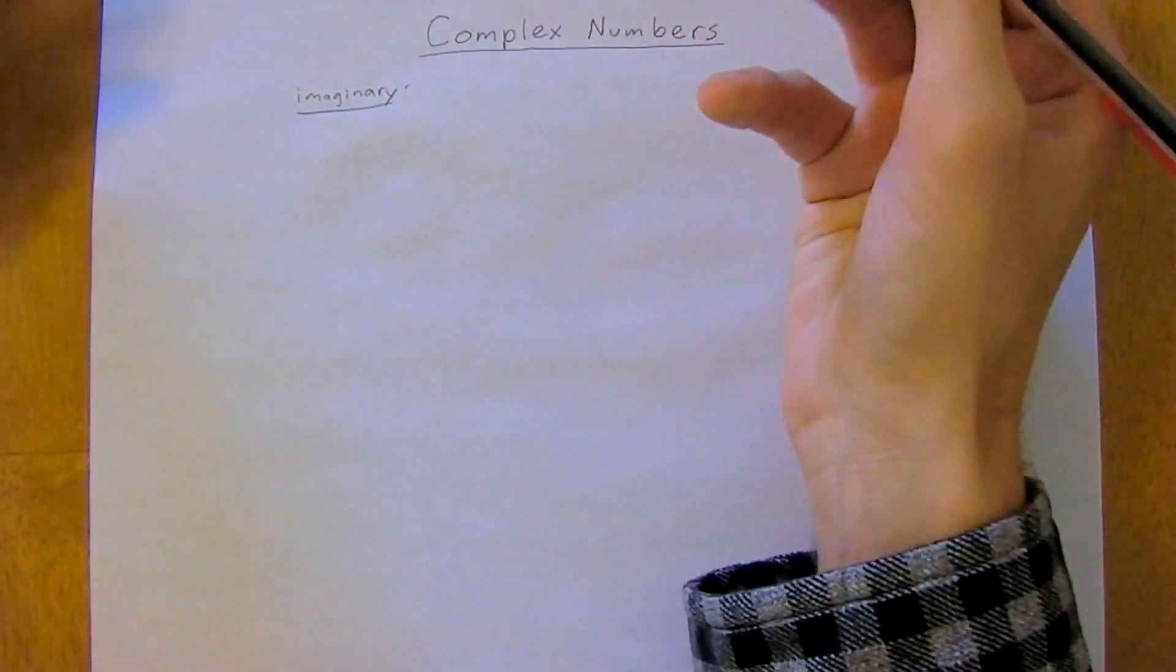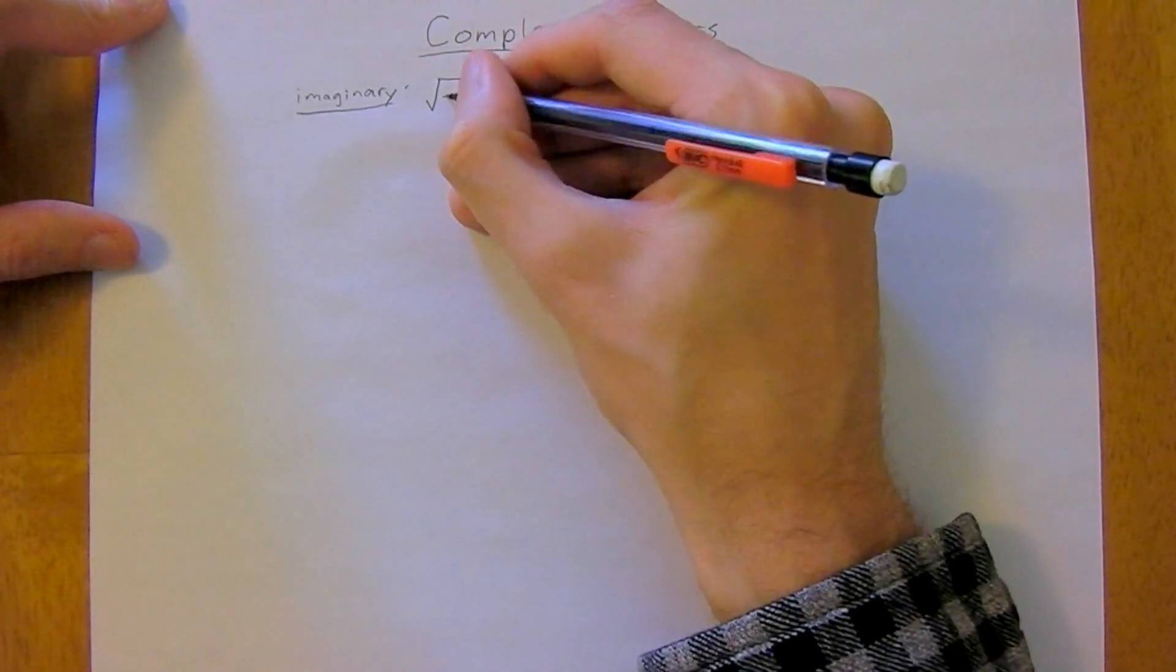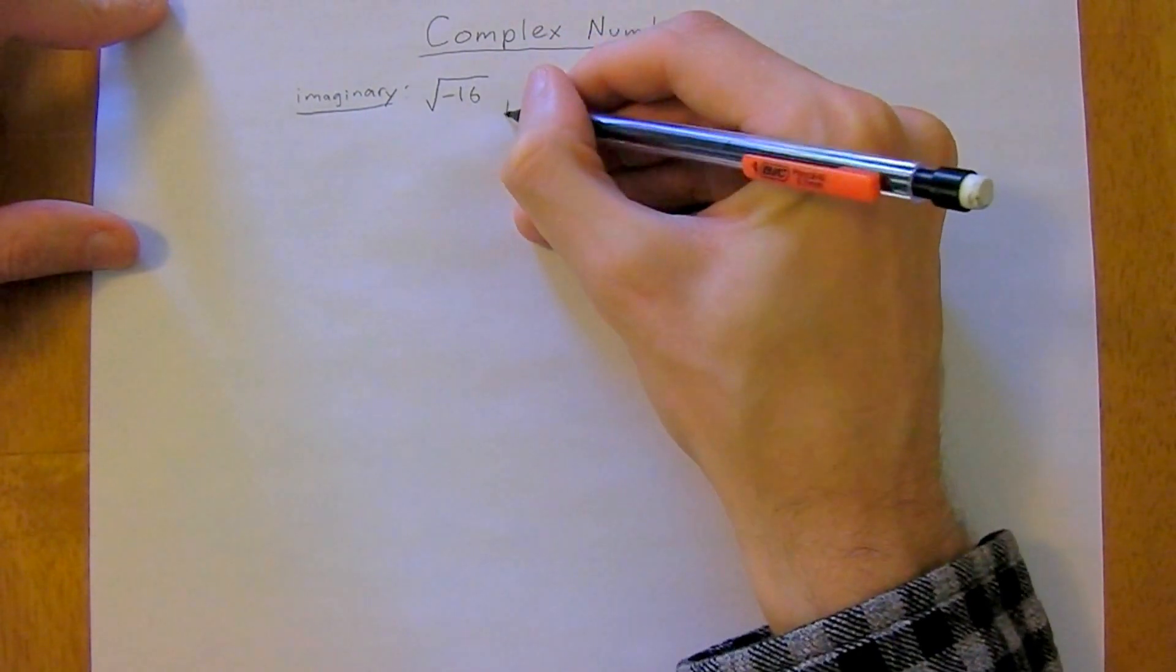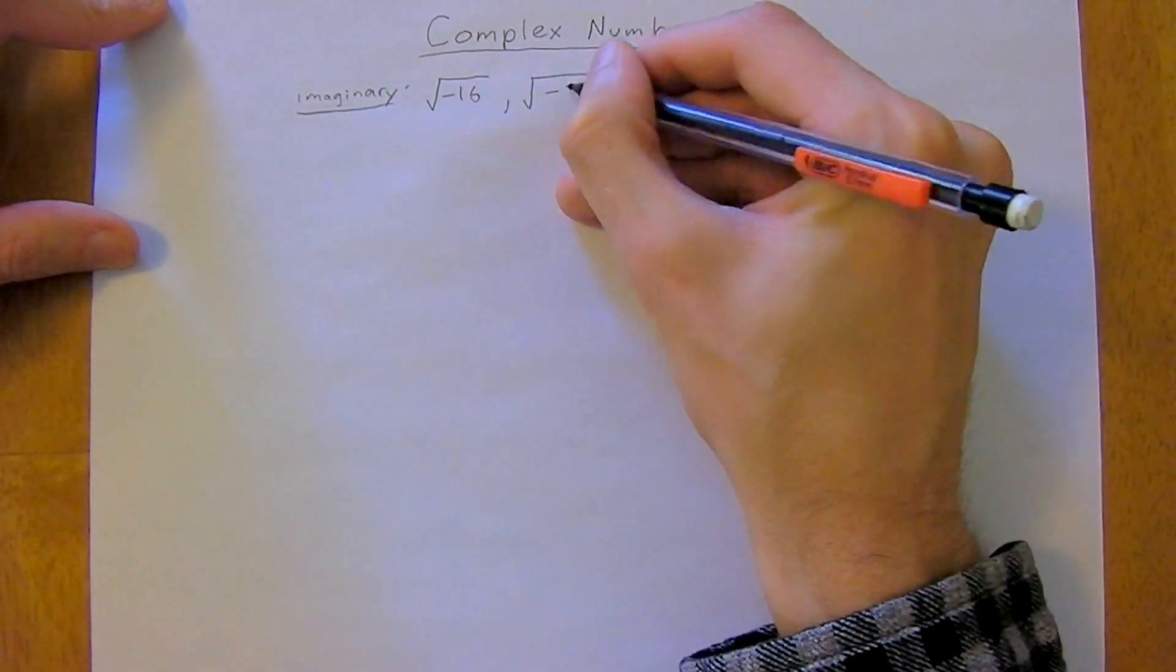An example of an imaginary number is square root of negative 16, or the square root of negative 3, or i cubed.